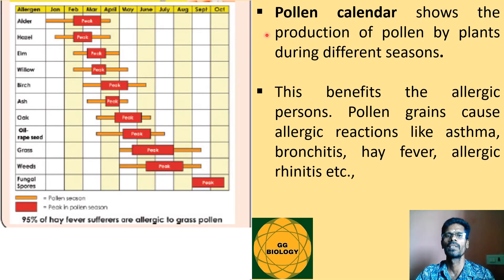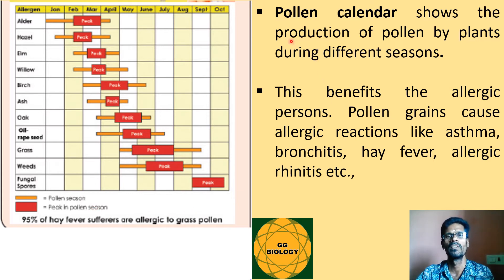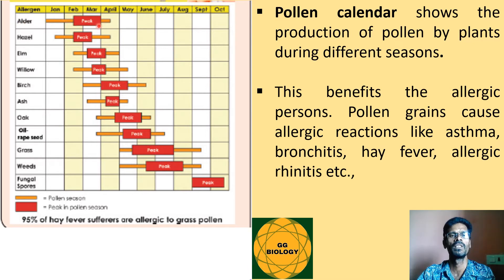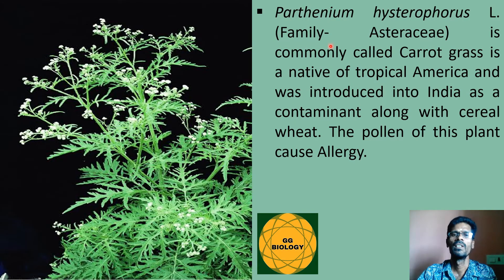A pollen calendar shows the production of pollen grains by different plant species during different seasons. In the calendar, species are shown vertically and months horizontally, indicating when each species produces pollen. Such a calendar benefits allergic individuals, as pollen grains can cause allergic reactions like asthma, bronchitis, hay fever, or allergic rhinitis.